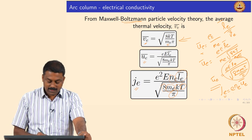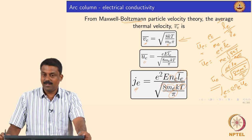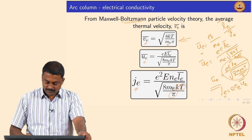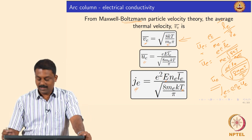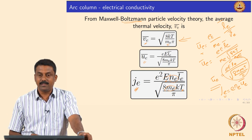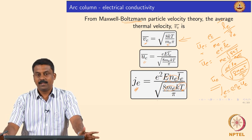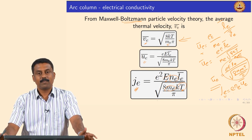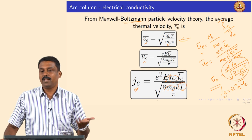In this equation for current density, the key variables are the electric field E and temperature T; the rest are constants or determined quantities like number density. Higher temperature increases collisions, reduces drift velocity, and increases resistance. Applying a higher electric field increases the drift velocity, so current flows faster. This is the fundamental relationship governing arc conductivity.